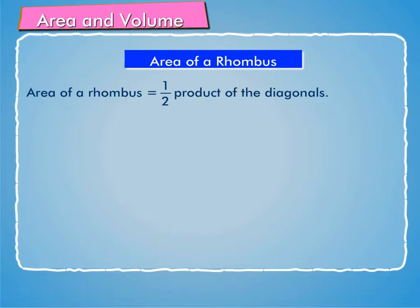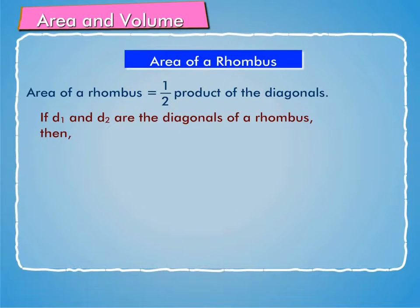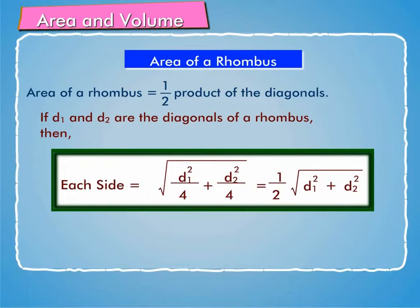We can also find the side of a rhombus when its diagonals are given. If D1 and D2 are the diagonals of a rhombus, then each side is equal to √(D1²/4 + D2²/4), which equals (1/2)√(D1² + D2²).